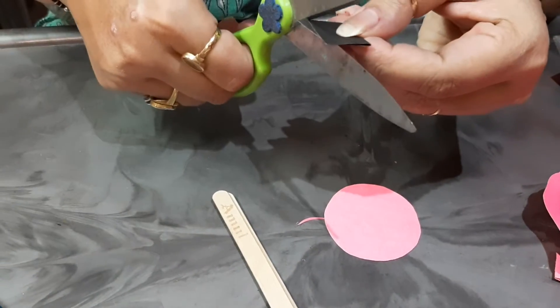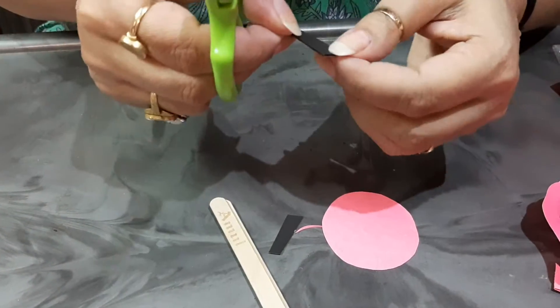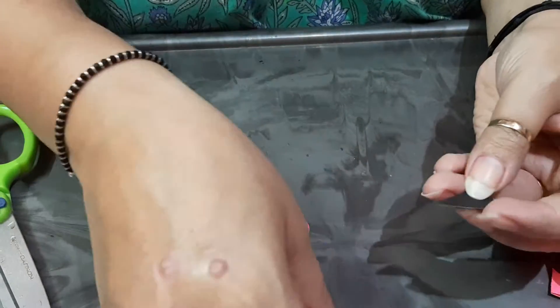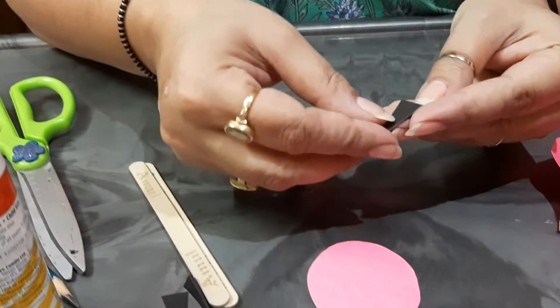And cut the triangle shape. This is a circle shape and this is a triangle shape.